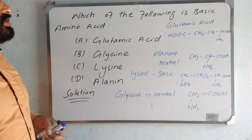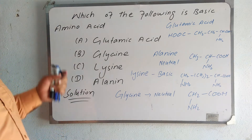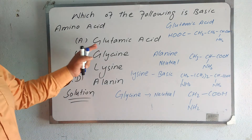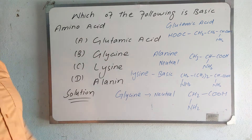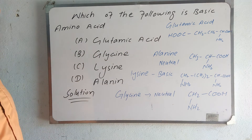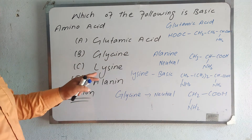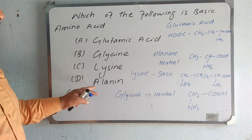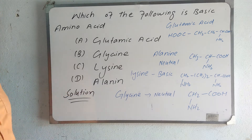Which of the following is a basic amino acid? Option A, glutamic acid; option B, glycine; option C, lysine; option D, alanine.